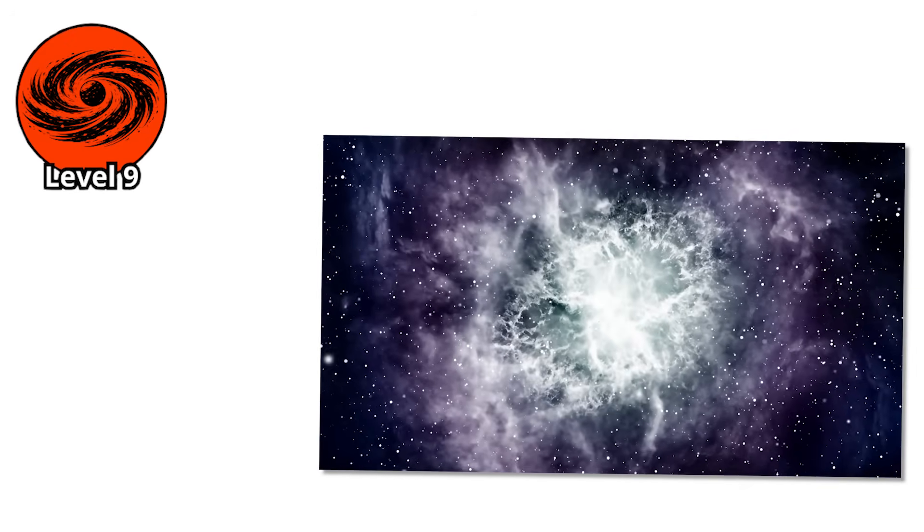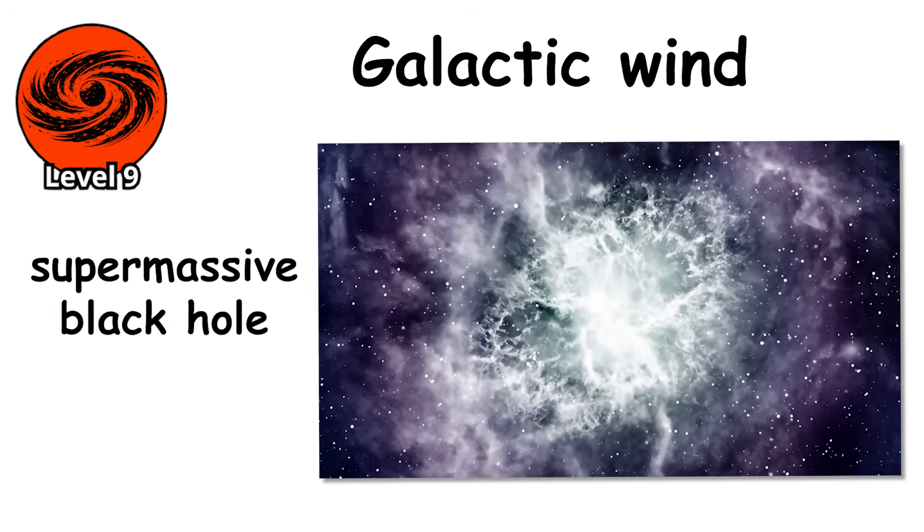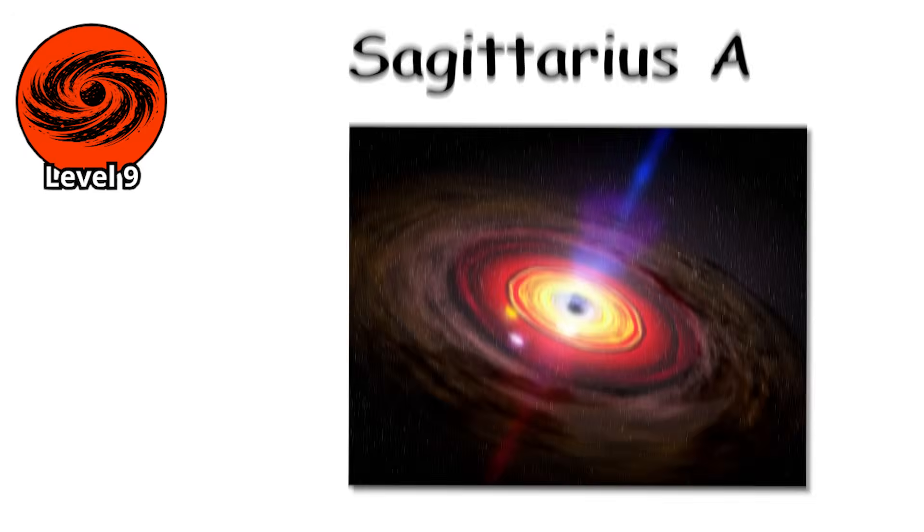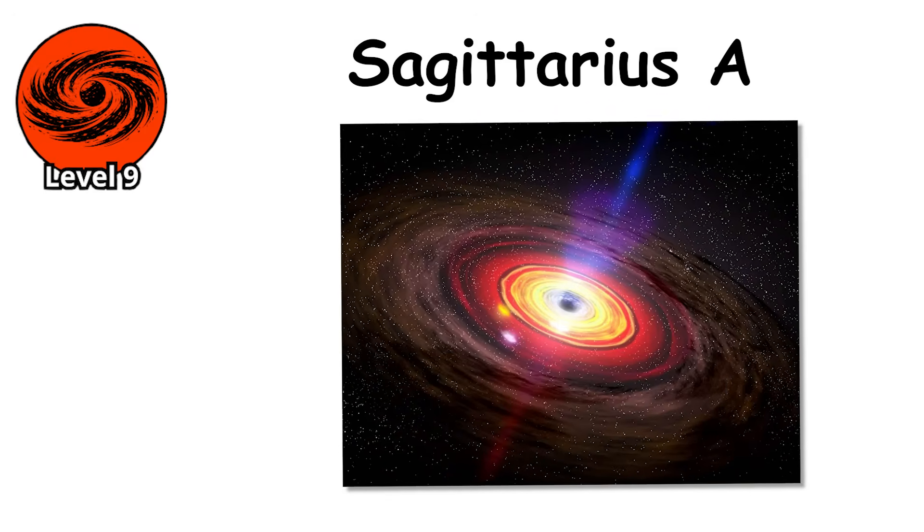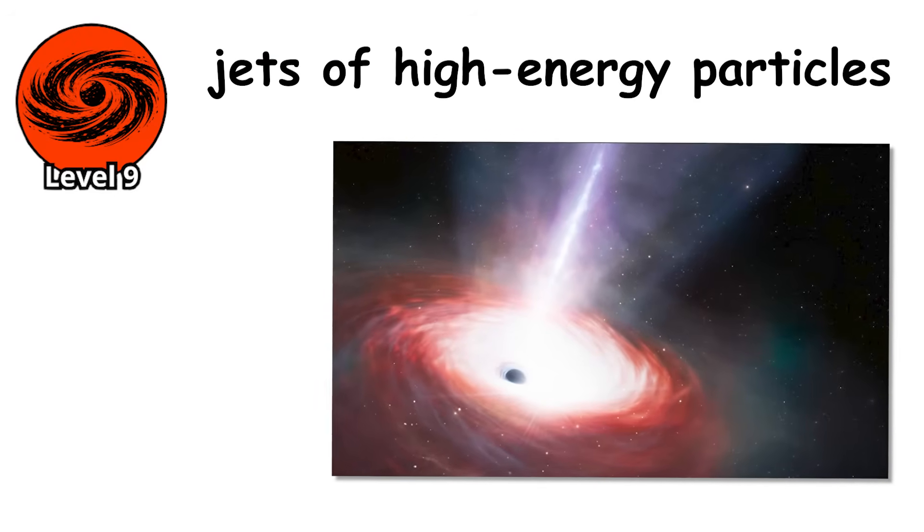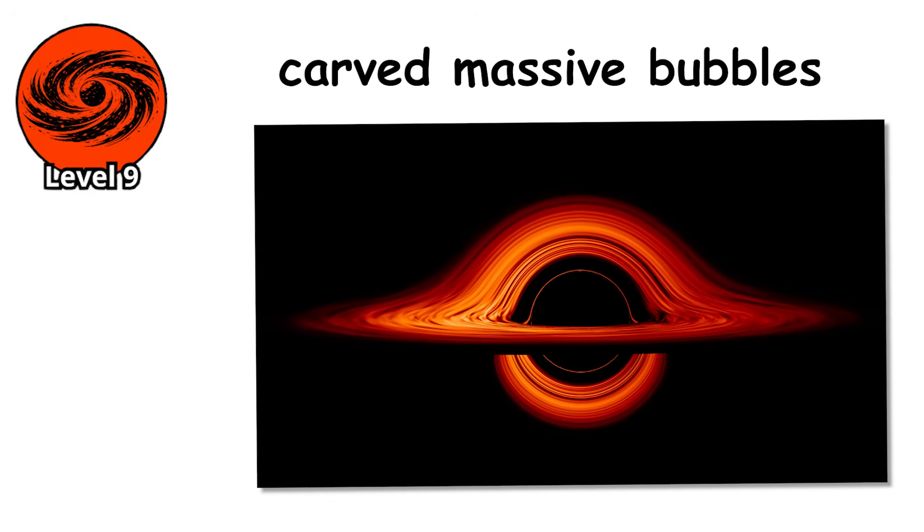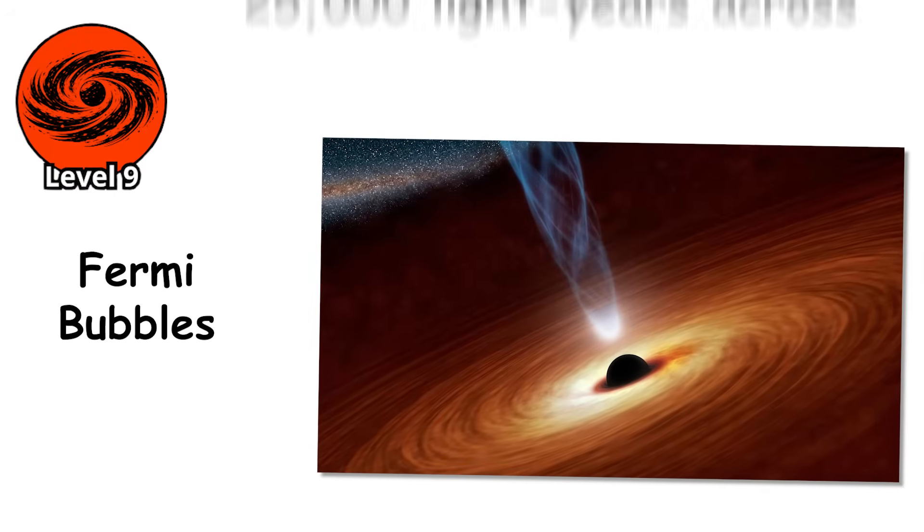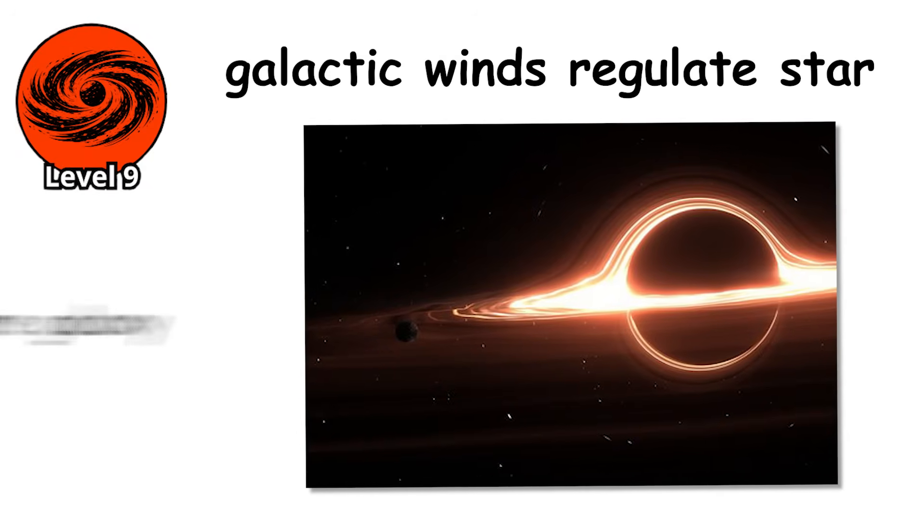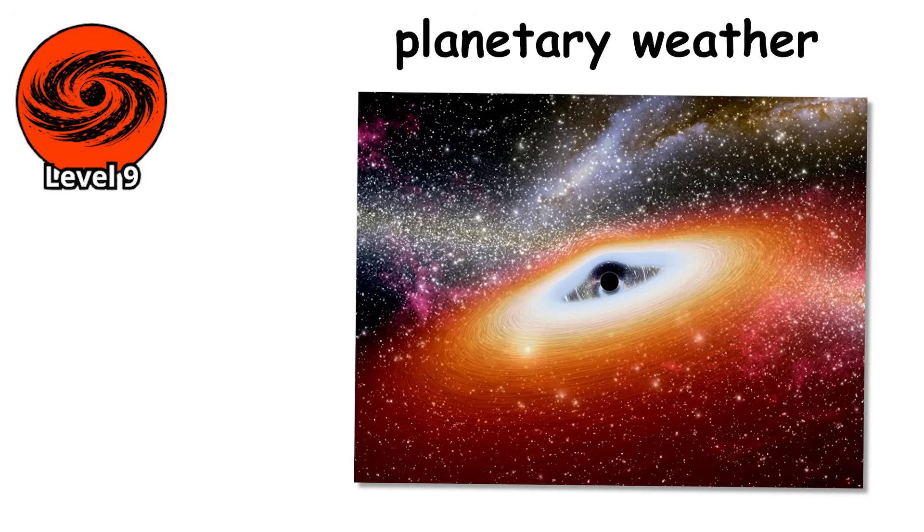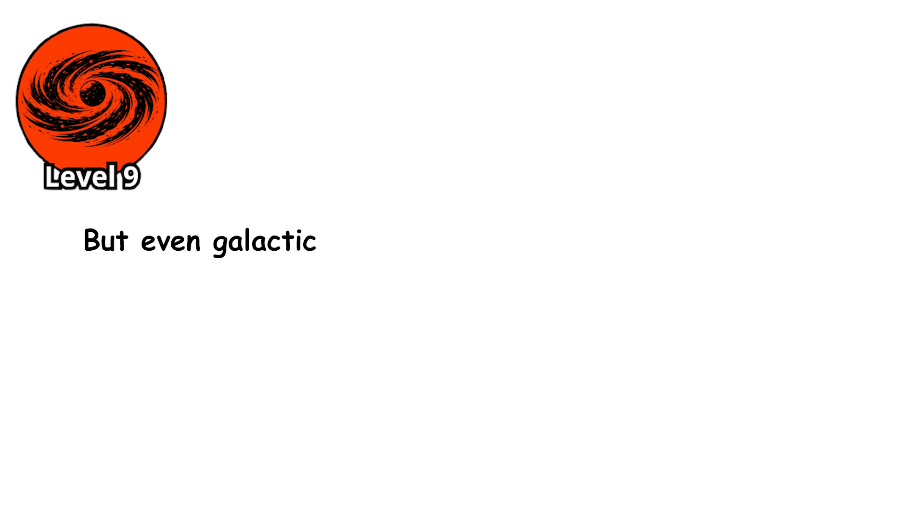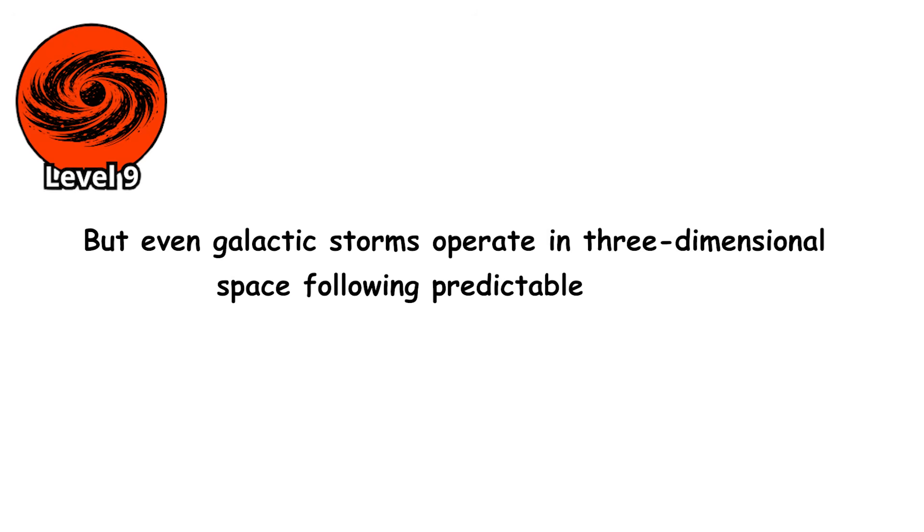But there's an even larger-scale weather phenomenon: the galactic wind from the supermassive black hole at the Milky Way's center. Sagittarius A, our galaxy's central black hole, occasionally consumes large amounts of matter. When it does, it releases jets of high-energy particles that blow outward into the surrounding space at relativistic speeds. These winds have carved massive bubbles above and below the galactic plane, structures called the Fermi bubbles, each stretching 25,000 light-years across. These galactic winds regulate star formation across the entire galaxy, storms on a scale that makes planetary weather look microscopic. But even galactic storms operate in three-dimensional space following predictable physics. What happens when the storm exists outside normal space-time?